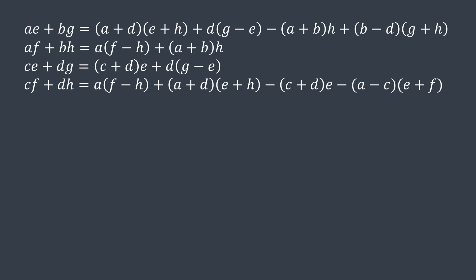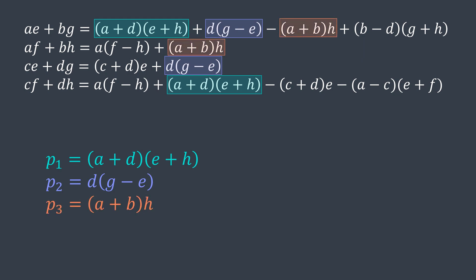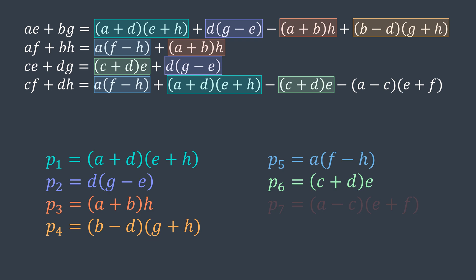Now you may be confused because we made the expressions even longer. But let's count the required products to calculate these expressions. We have (a plus d) times (e plus h), let's name it p1. We have d times (g minus e), let's name it p2. We have (a plus b) times h, let's name it p3. We have (b minus d) times (g plus h), let's name it p4. We have a times (f minus h), let's name it p5. We have (c plus d) times e, let's name it p6. And we have (a minus c) times (e plus f), let's name it p7.